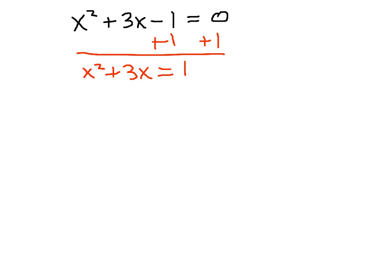What you'll have to do when you complete the square is find this missing third term — we'll call that d. We're going to add a d term to both sides. And then once we have that, this x squared plus 3x plus d — these three pieces — if we choose the right d, we can factor that into a grouping squared.